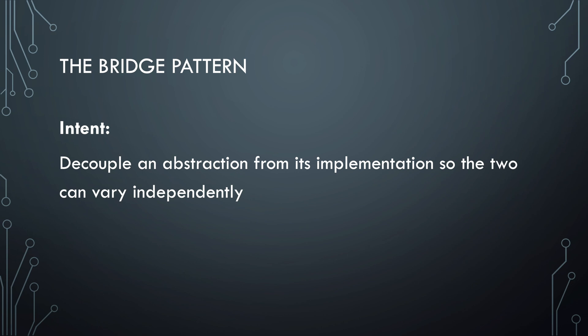What the bridge intends to do is make two parts of a software system work together. Each of the two parts can have variation, but these variations are independent. If this all sounds really abstract, don't worry about it. Later on, I'm going to show an example that explains exactly how this pattern works.